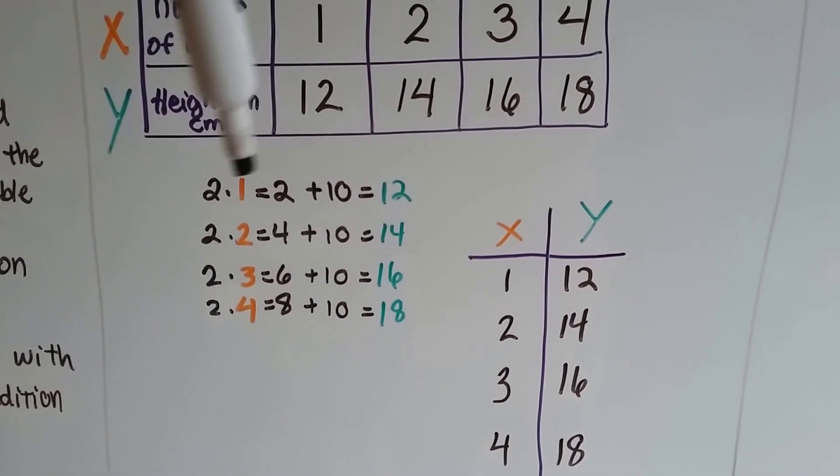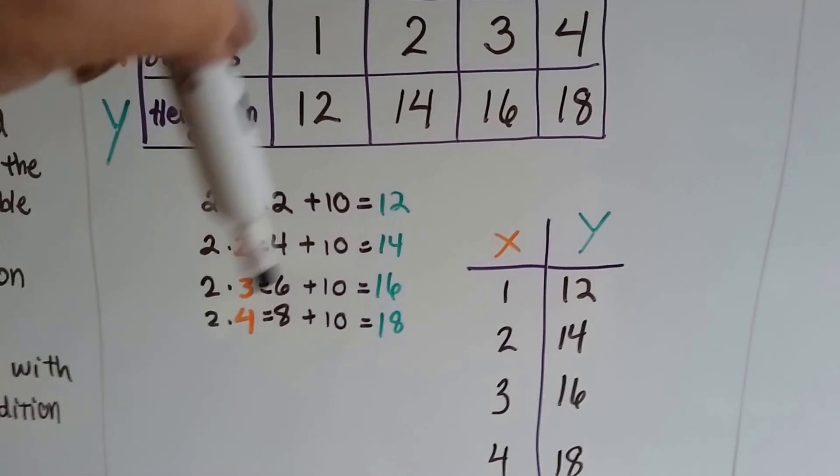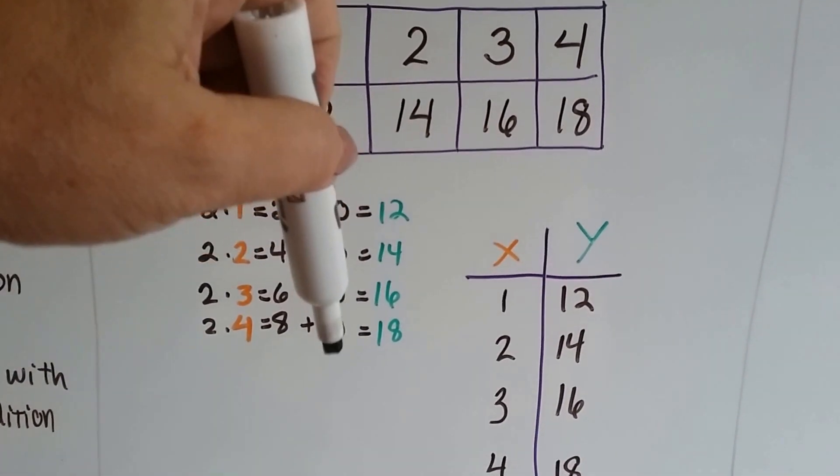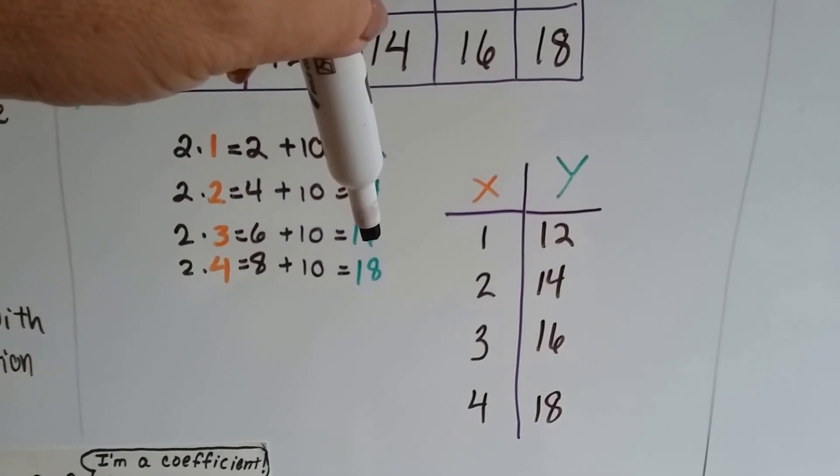So each day it grew 2 centimeters, and we added that to the original 10 centimeters of its original height, and we got new values for y.